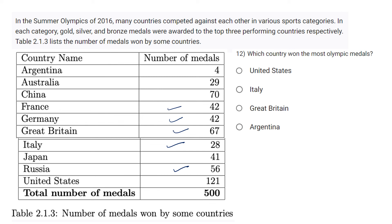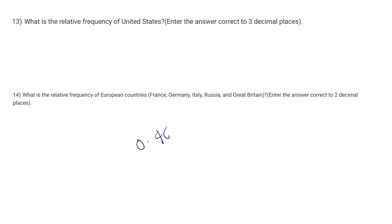Olympic medals problem. France, Germany, Italy, Russia, Britain. Calculating relative frequency. 22 plus 42 plus 28 plus 41 plus 56 equals 500. This is equal to 0.464.